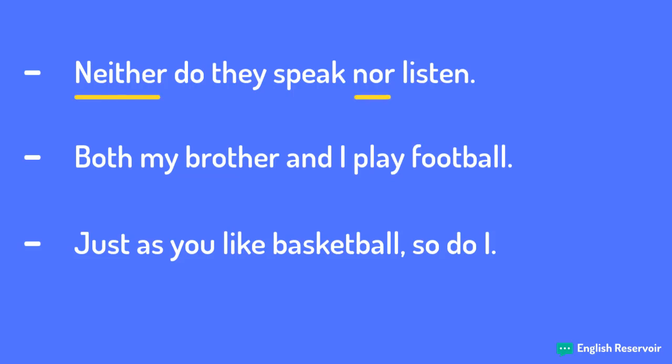Neither, nor, both, and, and just as, so — these are what we call correlative conjunctions in English. And there are more than just these ones.